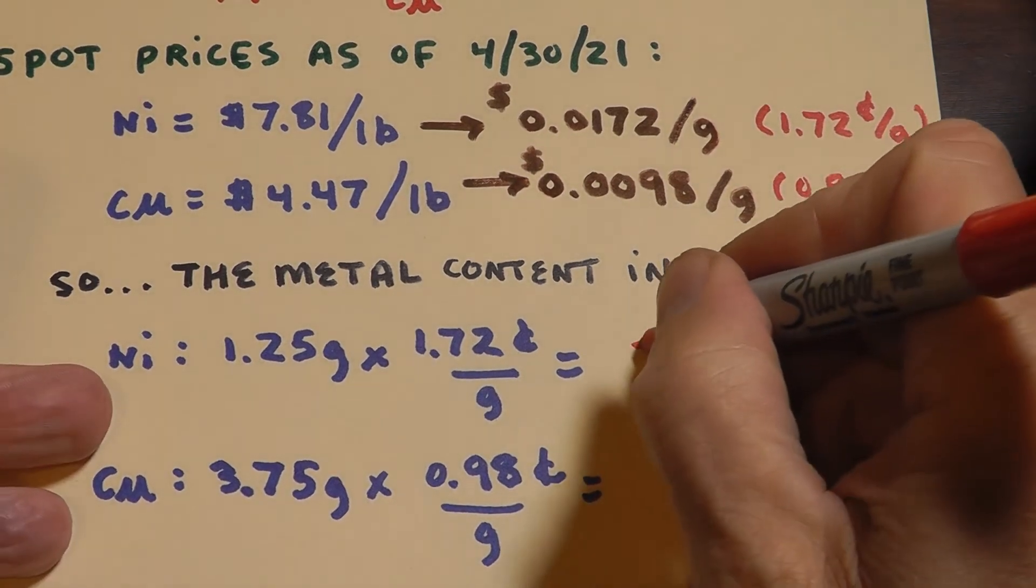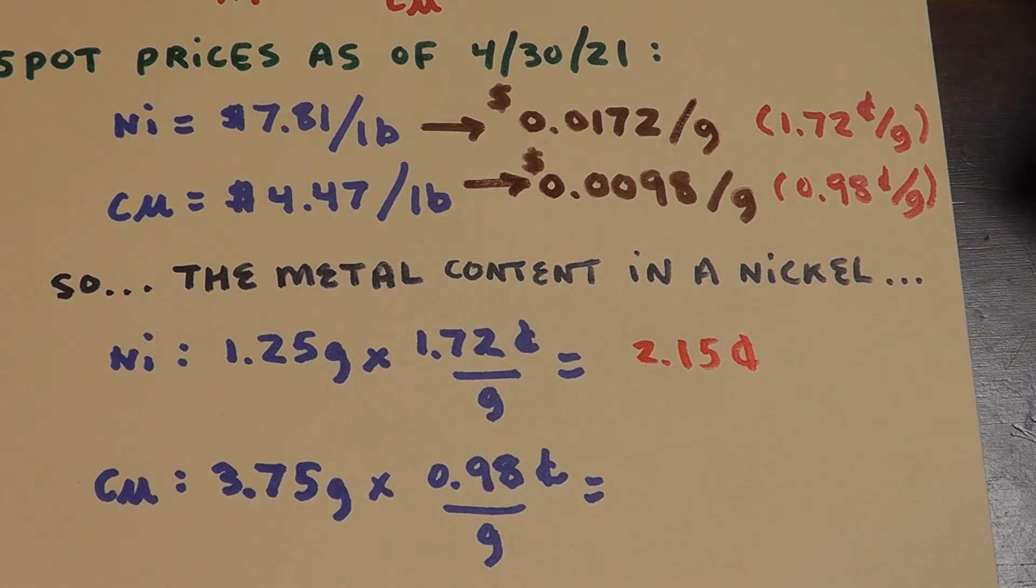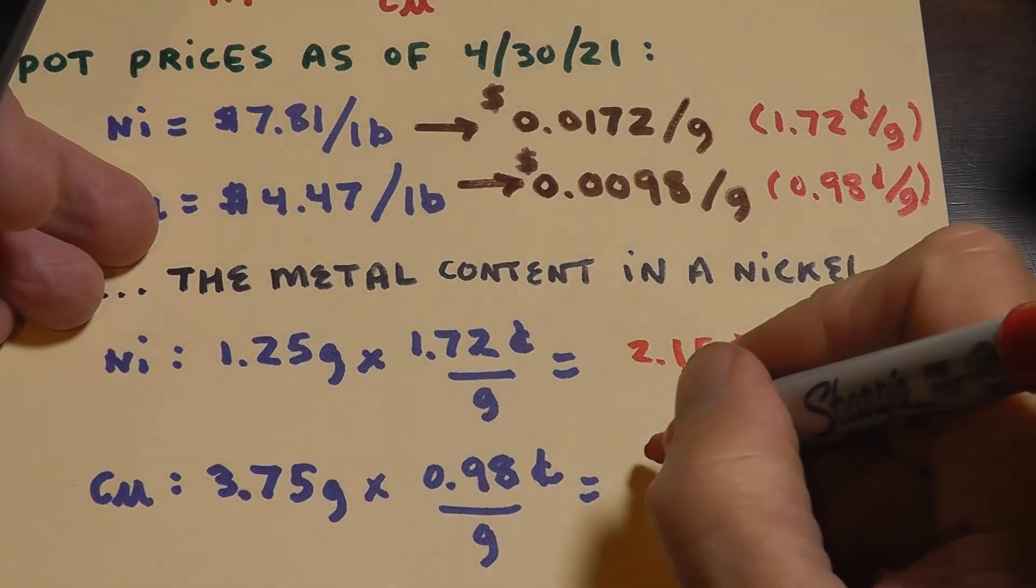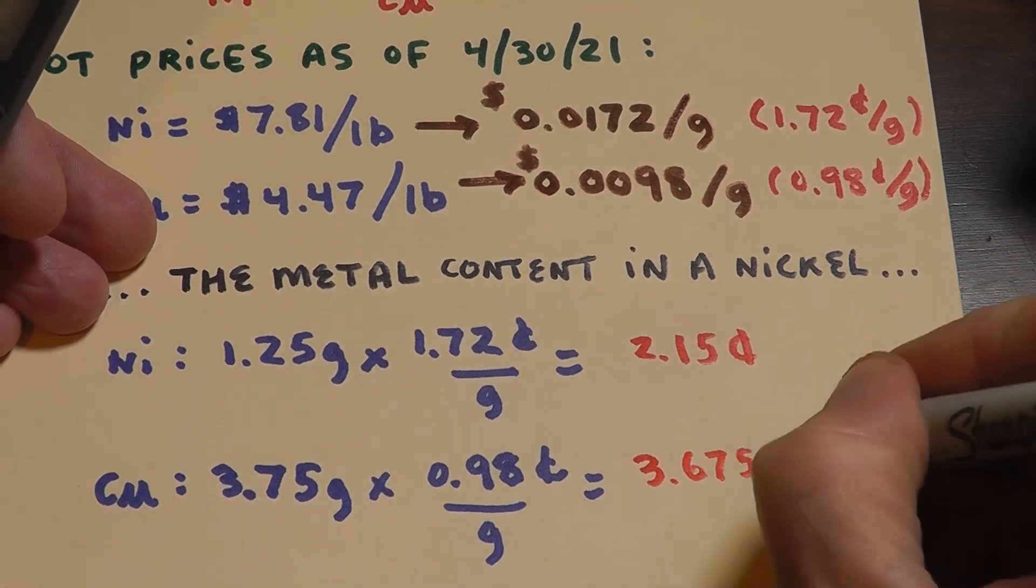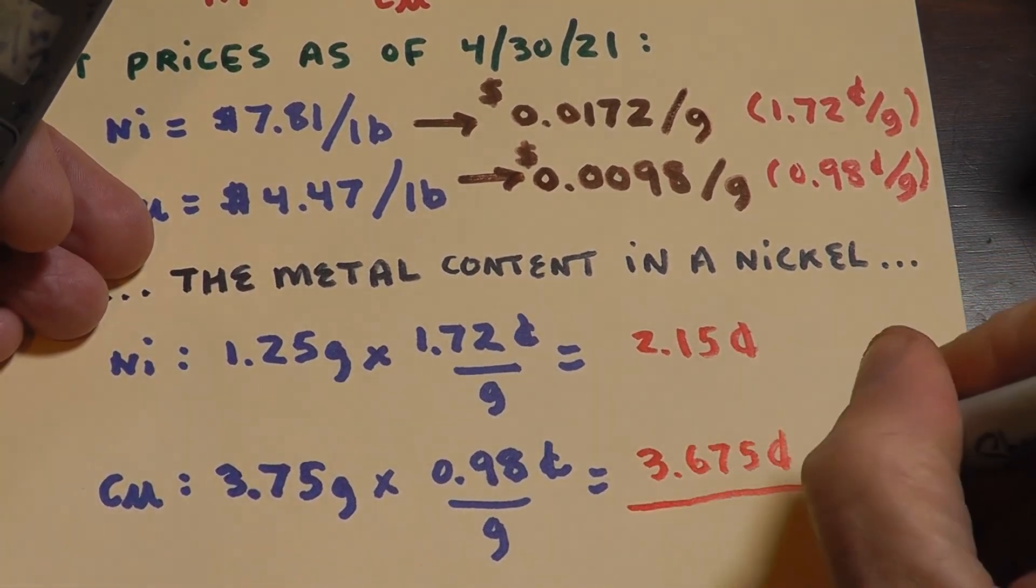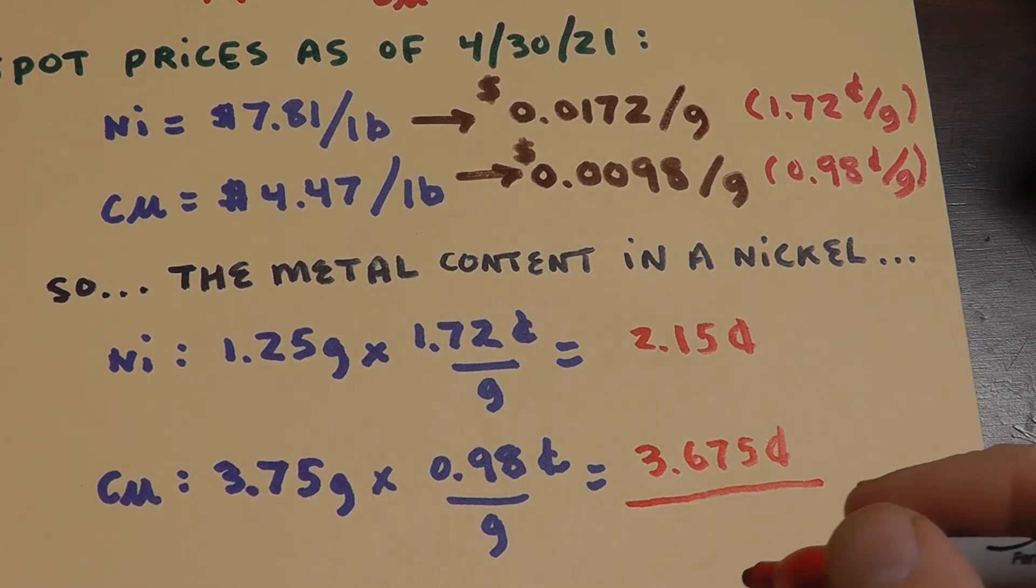That means that if I take 1.25 grams times 1.72 cents a gram, the nickel in a nickel is worth 2.15 cents. And the copper in a nickel is worth 3.675 cents. So add those together, that's the total content in a nickel. A nickel is really worth 5.825 cents.